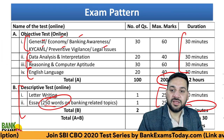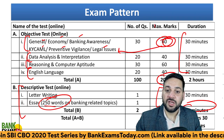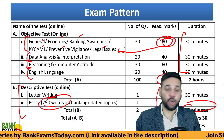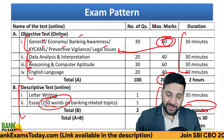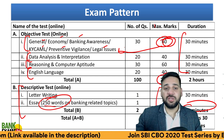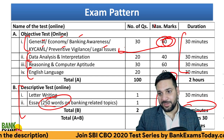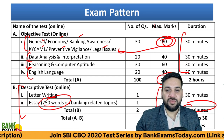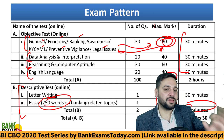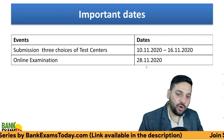60 marks are allotted to general economy and banking awareness — that is what you need to focus on. These marks are assured. We exactly know what is going to be asked from RBI circulars, SEBI circulars, and financial awareness. If you crack the financial awareness section, you can crack the whole exam.